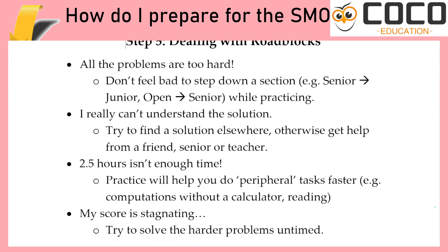A few common issues you will face: the questions are too hard. If you really cannot solve any of them — say you're taking the SMO Senior but can only solve three or four out of 25 every time — try the SMO Junior for a little bit. There's no shame in that. What it gets you is into the habit of solving a question in full rather than getting stuck halfway. If you're in the SMO Junior, go to your P5 or P6 Olympiads — your NMOS, SMO PS, RMO — but with a slightly higher target in mind. Step down, because that gets you into the habit of solving problems fully.